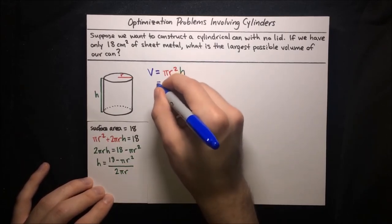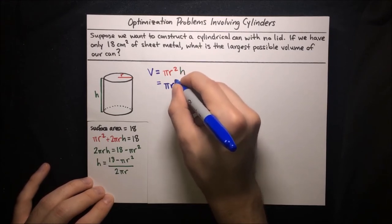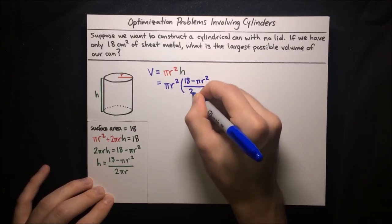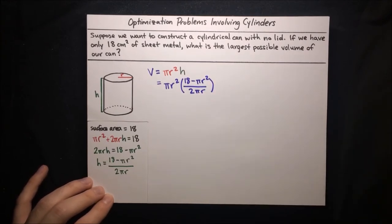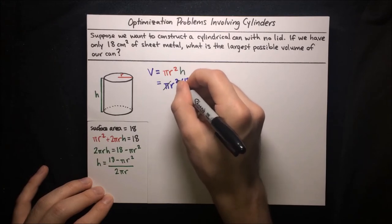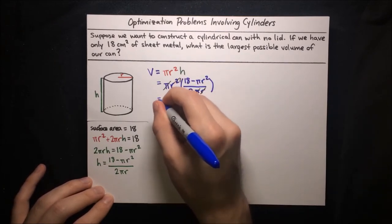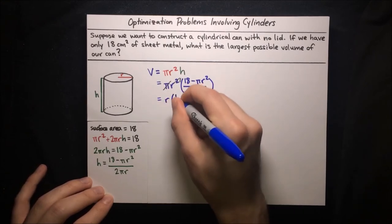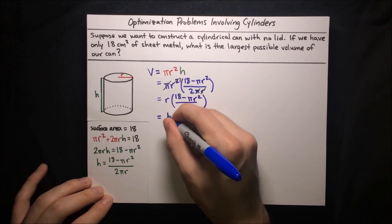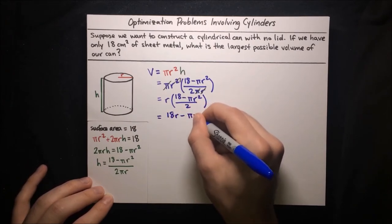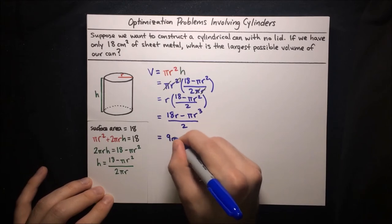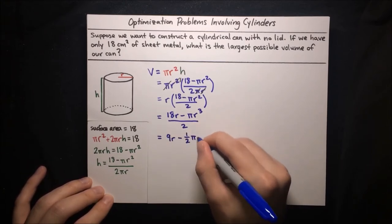We can substitute that into our volume formula. Volume is equal to pi r squared times h, and our expression for h is 18 minus pi r squared all over 2 pi r. We see some things cancel: the pi's cancel, and the r in the denominator cancels one of the r's, decreasing the power from 2 to 1. So volume equals r times (18 minus pi r squared) over 2, which equals 18r minus pi r cubed over 2, which simplifies to 9r minus one-half pi r cubed.